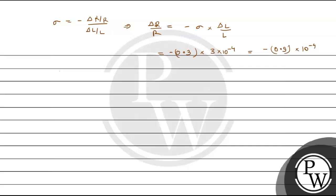Now we calculate del V by V. We know that it is 2 into del R by R plus del L by L. From equation 1, we have minus sign of del V by V equals to 0.9 into 10 to the power minus 4 plus its value is 3 into 10 to the power minus 4.